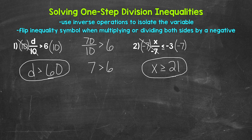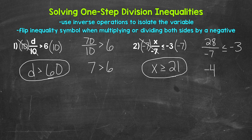Let's check a solution to make sure we are correct. Let's use 28 — that will work with the negative 7. So let's plug in 28 for x. We have 28 divided by negative 7 is less than or equal to negative 3. 28 divided by negative 7 gives us negative 4. So we have negative 4 is less than or equal to negative 3. That is true. So we are correct: x is greater than or equal to 21.